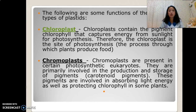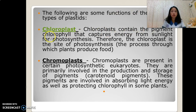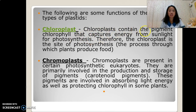The following are some functions of different types of plastids. Chloroplasts contain the pigment chlorophyll that captures energy from sunlight for photosynthesis. Chromoplasts are present in certain photosynthetic eukaryotes.